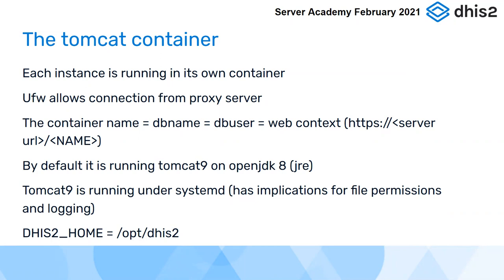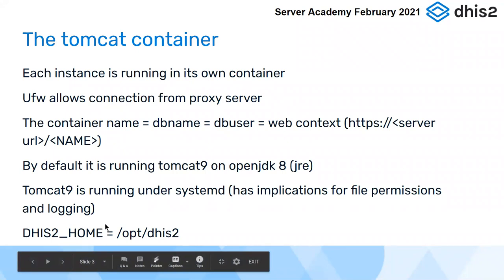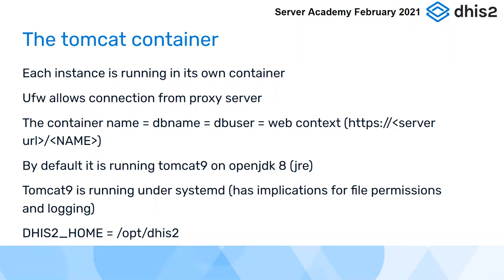Tomcat 9 itself is running under systemd — that's the mechanism the operating system uses for starting, stopping, and running the Tomcat executable. That has a couple of implications for things like file permissions and logging. Regarding the DHIS2 home directory: if you've set up DHIS2 manually you'll know you needed to set the DHIS2_HOME environment variable. With this setup it defaults to /opt/dhis2, so that's where you find your dhis.conf file. We don't actually have to set the environment variable at all because /opt/dhis2 is the default.